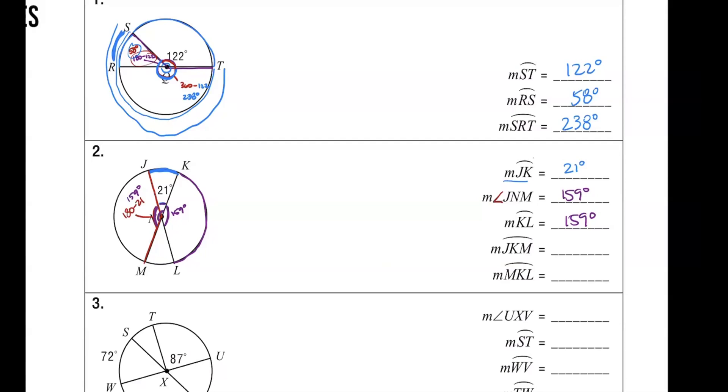All right. So now, we're still at number two. JKM goes from here all the way over here. So, how do we do that? So, let's look here. We know from here to here is how many? 180, right? So, semi-circle. So, if I want to go the rest of the way, I need 21 more to go the rest of the way. So, that means it's 180 and 21, which is 201 degrees.